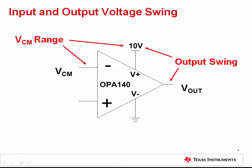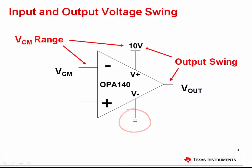The common mode input voltage range is always defined relative to the positive supply and the negative supply. When you exceed the common mode input range, the output becomes non-linear. Output voltage swing is the range of output voltages that allow for linear operation of output signals. Output swing is also defined relative to the power supplies. The output signal becomes distorted and non-linear if you exceed the op amp's output swing specifications.